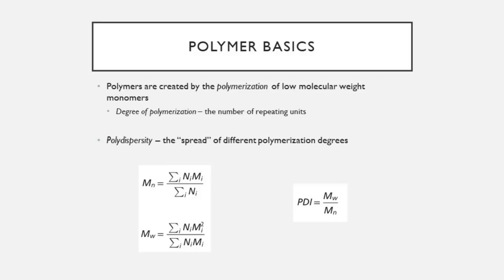Polymers are created through the polymerization of low molecular weight parts called monomers. The degree of polymerization determines how many repeating units are in a single molecule — think of it as the extent of a reaction. A short reaction creates a small polymer, but allowing the reaction to continue can in theory make an infinitely large polymer, though in practice many factors prevent that.